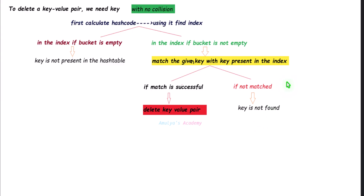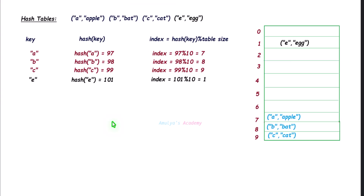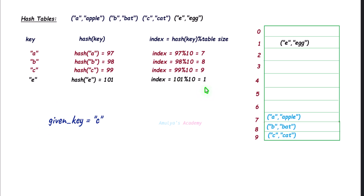We follow these steps when there is no collision in the hash table. Here we have a hash table containing four elements at different indices with no collision. If I want to delete the key-value pair for key 'c' (cat), the given key is 'c'. First we find the hash code, then find its index — we get index 9, as shown in the calculations.